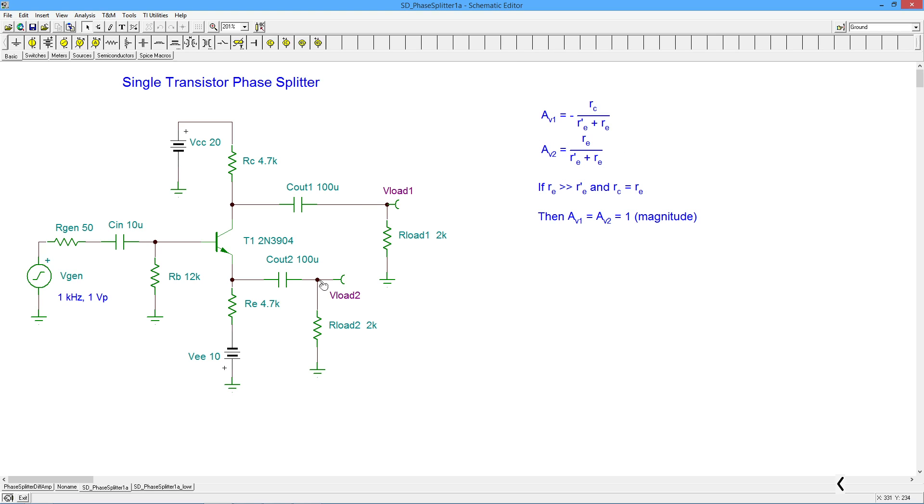Well, clearly, if we can make RE a lot bigger than R prime E, we can kind of throw R prime E away. And in the top equation, you get RC over RE inverted. In the bottom, when you get RE over RE, and if you then set RC and RE to the same size, you have a gain of 1 off the collector and a gain of minus 1 off the collector. I think I said emitter for the first one. So it's a gain of 1 off the emitter and a gain of minus 1 off the collector.